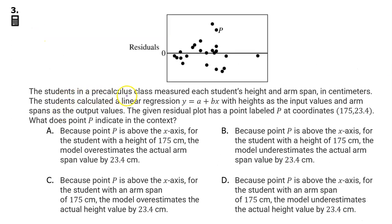Number 3. The students in a pre-calculus class measured each student's height and arm span in centimeters. The students calculated a linear regression model, y equals a plus bx, with heights as the input values and arm spans as the output values. The given residual plot has a point P at coordinates 175, 23.4. What does the point P indicate in the context?